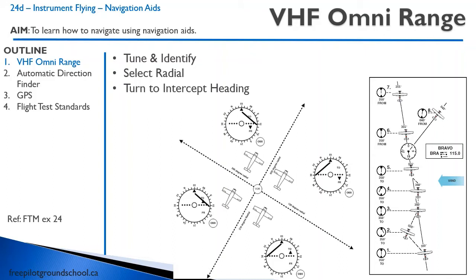It's actually a lot easier in the airplane than on the ground, because you should have situational awareness and know where you are. As you approach the radial, the course deviation indicator — the CDI — will come into the center, and then you just fly that radial and correct for wind. If you drift, say, two degrees off, turn four degrees back until you're on your radial, then crab in two degrees. Let's watch a video of intercepting a VOR radial.